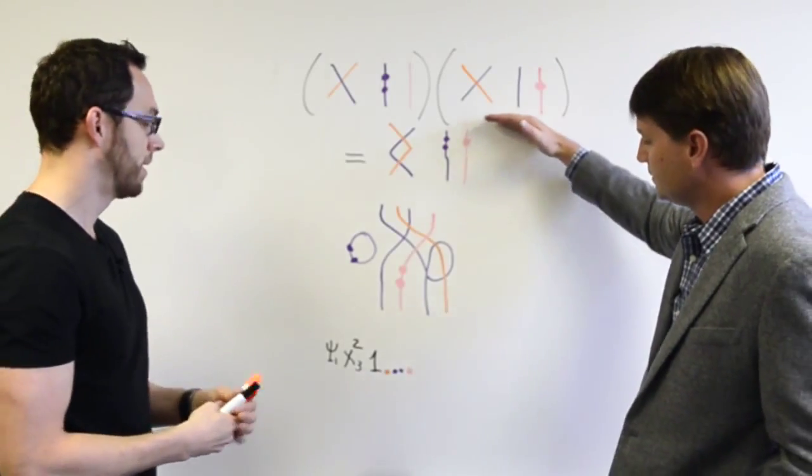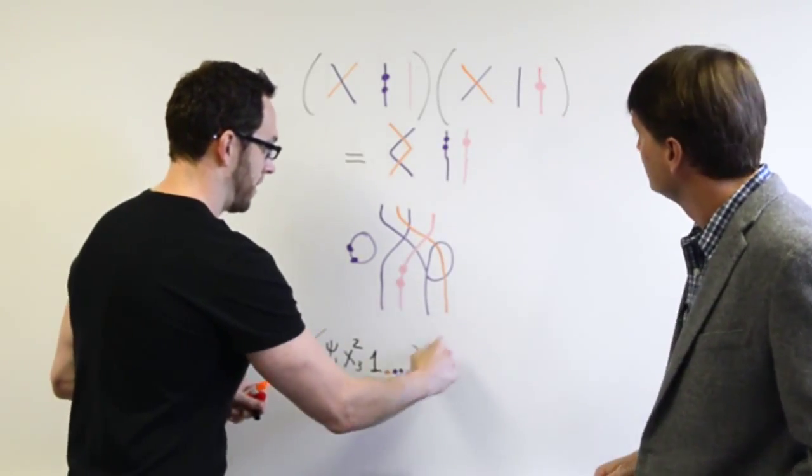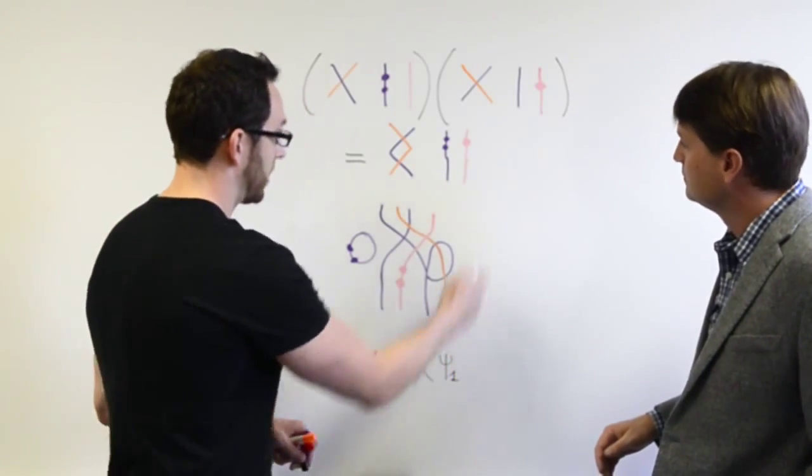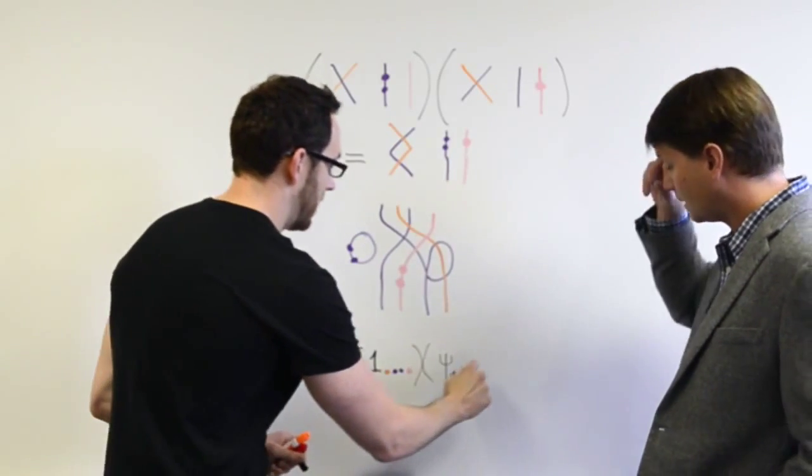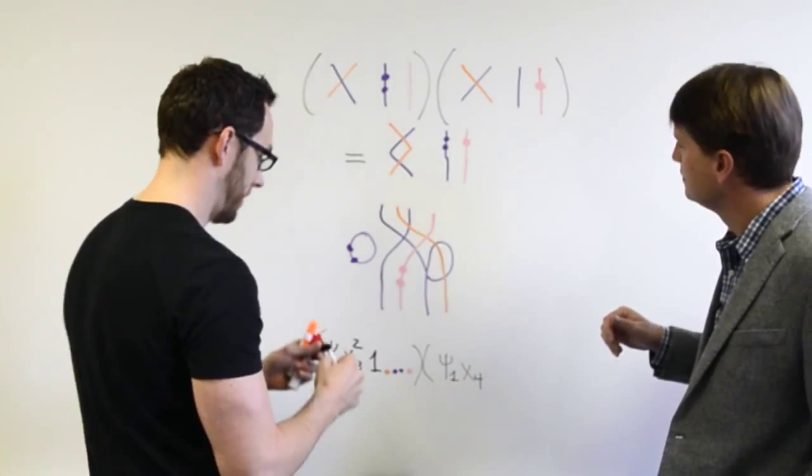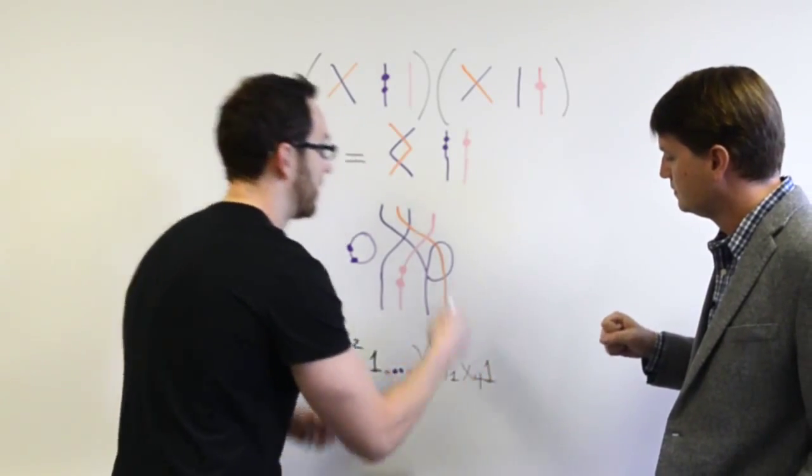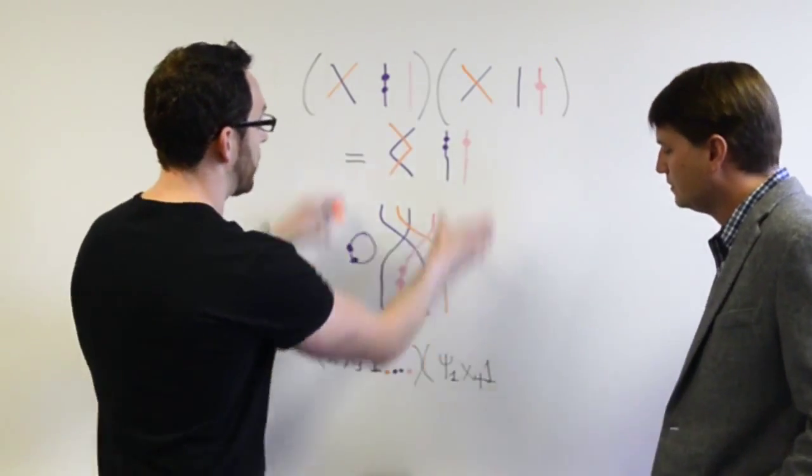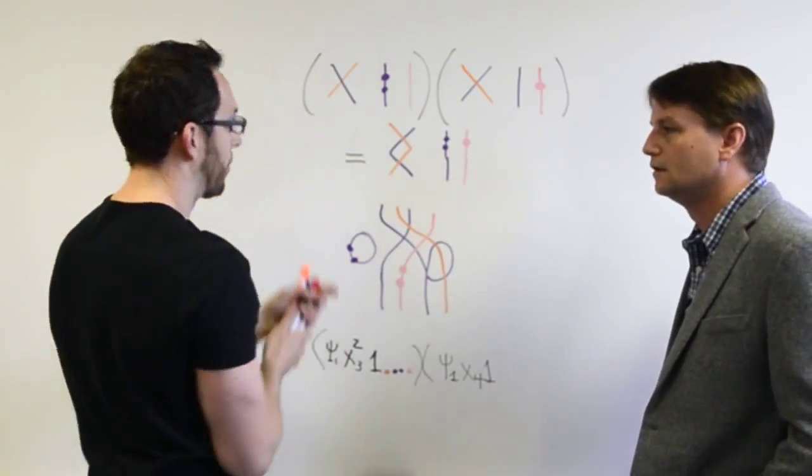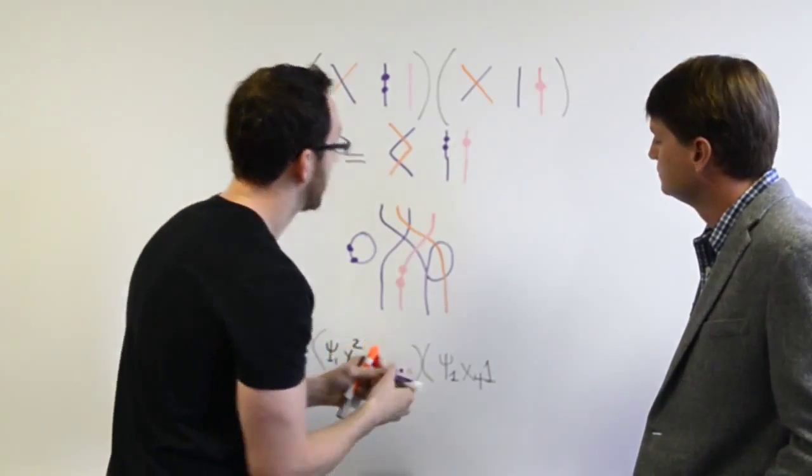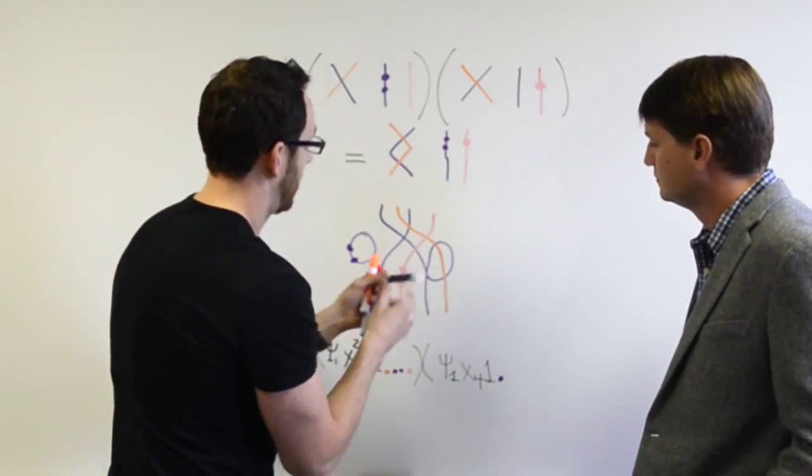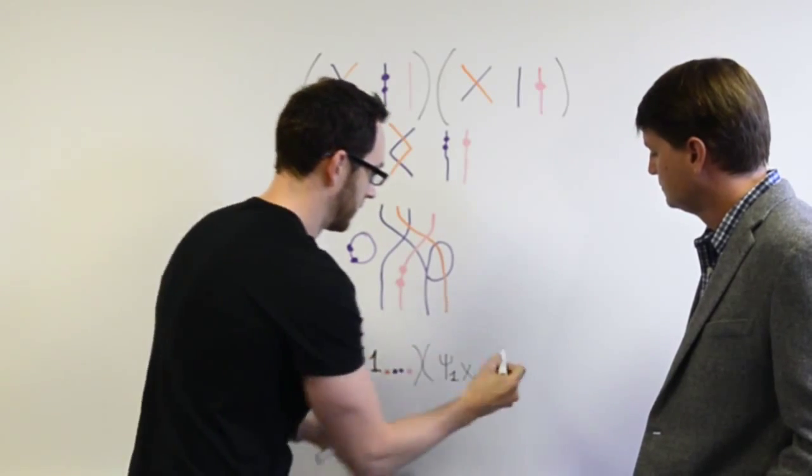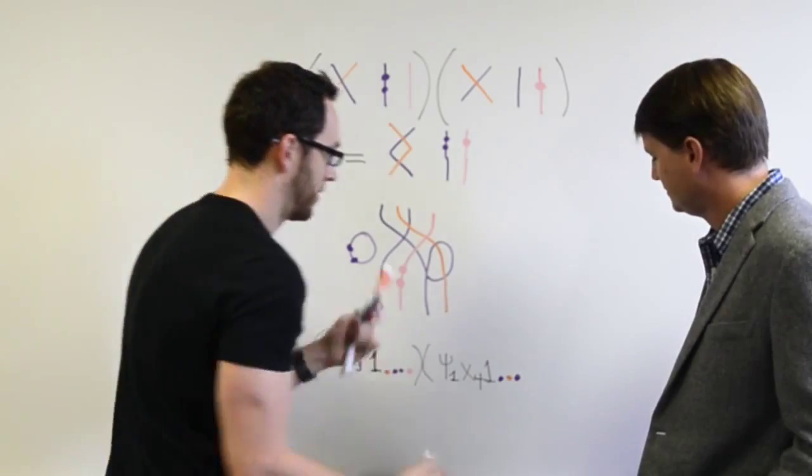So this element here would just look something like this picture down here. And then once you do this, exactly. So now I want to multiply this by the element. Again, I have a crossing, so I would draw a psi of the first string. Nothing's happening here, so I don't need to write anything. Got it. And then the last, the fourth string, we're putting a dot on. And again, I have to keep track, because you want to say what are the bottom colors. Right. Because these pictures, I can only multiply the pictures when the colors match up. If the colors don't work, then it's by definition zero.